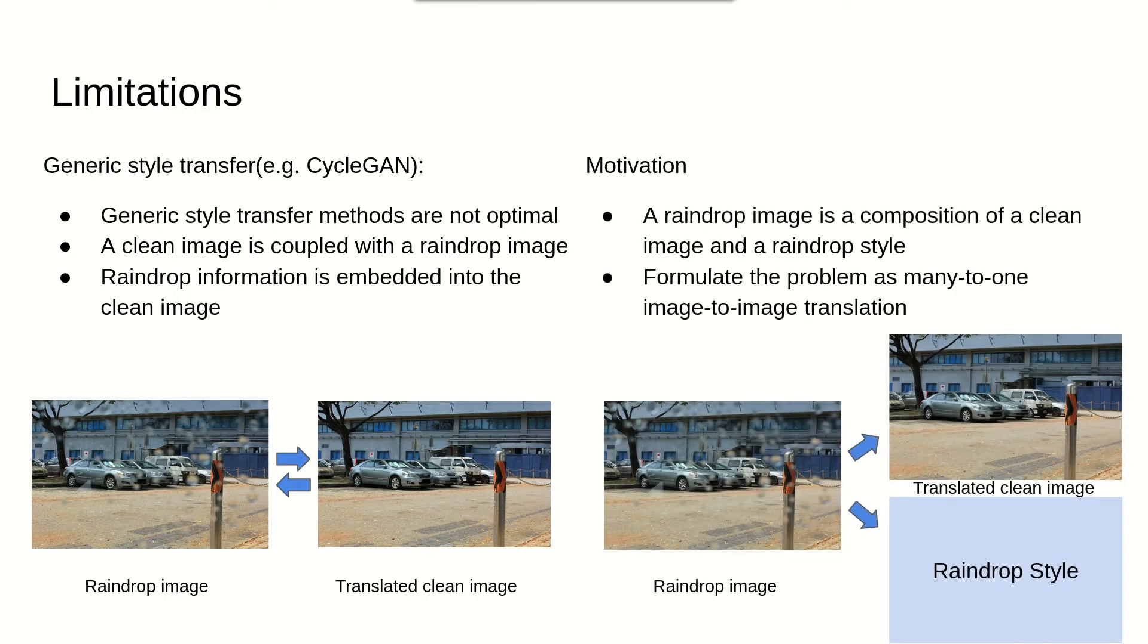Our framework is built on top of GAN and is motivated by the assumption that a rain drop image is a composition of a clean image and a rain drop style. Hence, the rain drop information can be eliminated from the translated clean image completely and be encoded into a separate rain drop style latent code. We will be using rain drop style latent code and rain drop style interchangeably in the following sections. The rain drop style can be composed back to the original rain drop image with the translated clean image or be composed to a new rain drop image with another clean image. The newly generated rain drop image can serve as data augmentation. Hence, we formulate the rain drop removal as a many-to-one image-to-image translation problem.